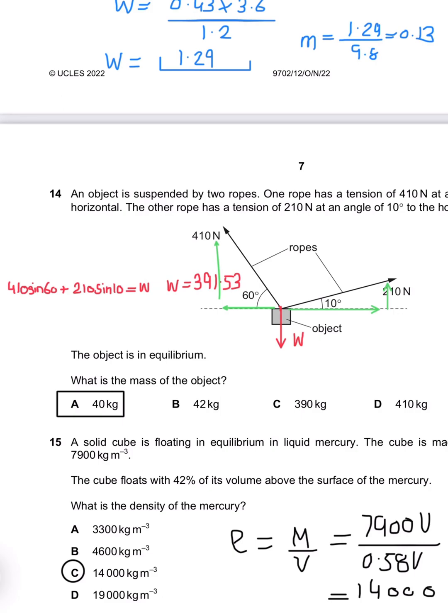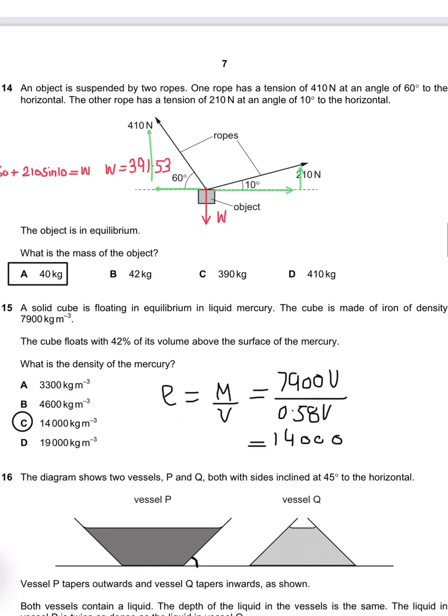Question 15: A solid cube is floating in equilibrium in liquid mercury. The solid is made of iron of density 7900. The cube floats with 42 percent of its volume above the surface. What is the density of the mercury? Density is mass over volume. Mass can be written as density times volume, so density is 7900 and the total volume is V. The volume in contact is 58 percent, so that's 0.58V. Then 7900 divided by 0.58 makes 14,000. So C is the appropriate answer.